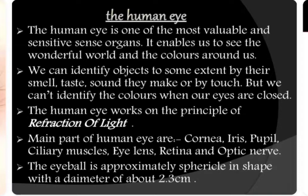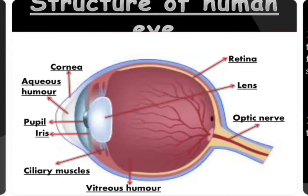The human eye works on the principle of refraction of light because it has a biological lens in front of it. The main parts of the human eye are cornea, iris, pupil, ciliary muscle, eye lens, retina, and optic nerve. The eyeball is approximately 2.3 cm in diameter.